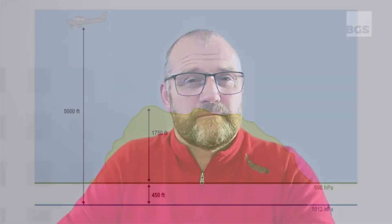Now we have a clear picture of what's going on and we can do some calculations. The distance between the 1,013 hectopascal level and the 998 hectopascal level is given by: 1,013 minus 998 equals 15, times 30 feet per hectopascal, gives us 450 feet. Now we know the distance between the 1,013 hectopascal level and the top of the terrain — this is simply 450 feet plus 1,750 feet, which equals 2,200 feet.